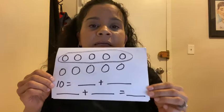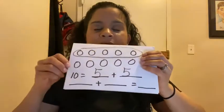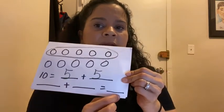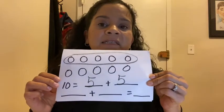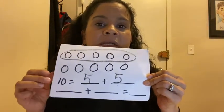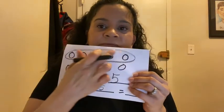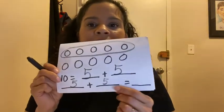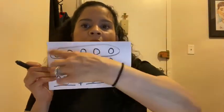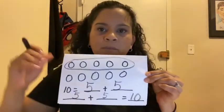Now let's take a look at the next number sentence: blank plus blank equals blank. We see the plus sign first, so we're going to write in the parts. If you said five plus five, you are correct. The first five represents the group of five that we circled first, the other five represents the ones we did not circle. And five plus five will equal to ten — which equals all the circles together, the whole number.